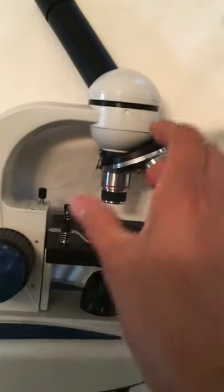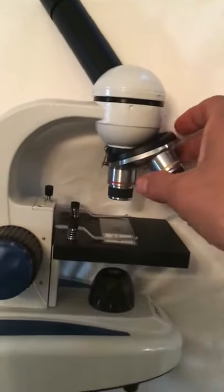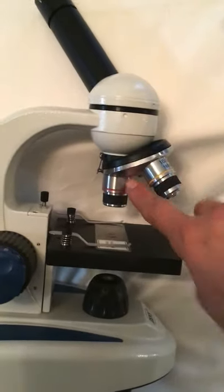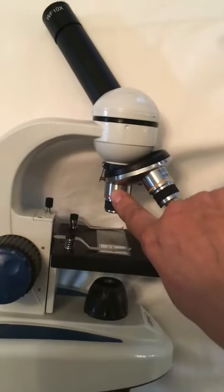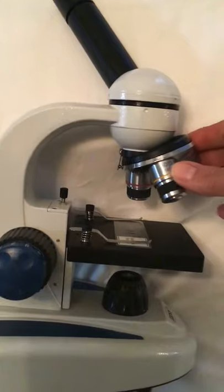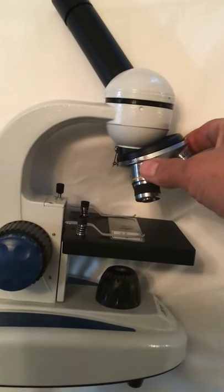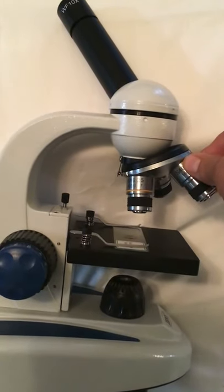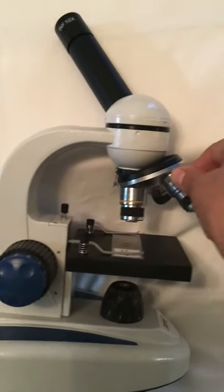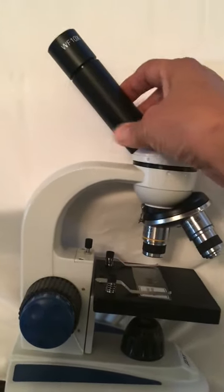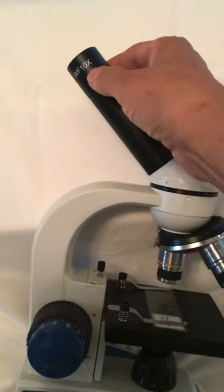The lenses that are used for magnifying the object are called objectives. You have the scanning objective, and this is at 4x power. Then you have the low objective, which is 10x power. And then you have the high objective, which is going to be at 40x power. So how do you figure out how big the object is when you're looking at it? Automatically, your eyepiece is going to increase the size of the image by 10 times.